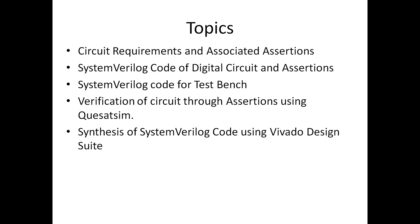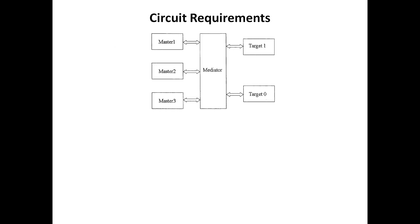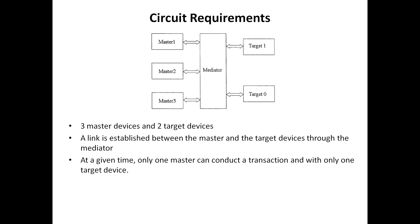First, coming to the circuit requirements and associated assertions. Here we have a circuit with three masters, a mediator, and two targets — so three master devices and two target devices. A link is established between the master and the target devices through the mediator, and at a given time only one master can conduct a transaction.